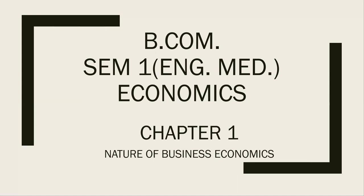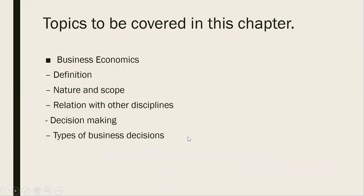In economics, our first chapter is called Nature of Business Economics. In this chapter we are going to cover: business economics, its definition, nature and scope, how business economics is related with other disciplines such as mathematics, statistics and others, decision making, and the types of business decisions. These are the main points, along with certain definitions and sub-points that will also be discussed.